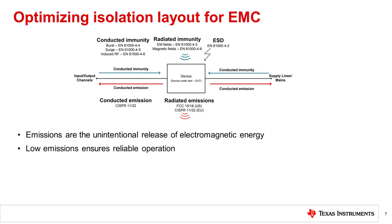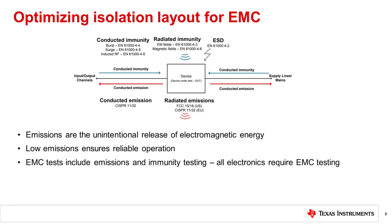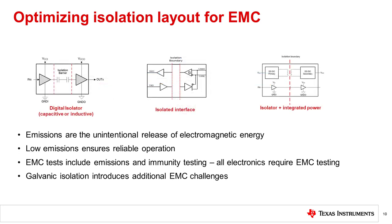Circuit emissions are the unintentional release of electromagnetic energy, and having low emissions ensures reliable operation without negatively impacting adjacent subsystems. Emissions limits differ for end market and applications, but all electronics are required to meet some level of emissions testing. The use of galvanic isolation between circuits can create additional electromagnetic coupling and emission challenges that can be easily managed through careful component selection as well as optimized PCB design techniques.